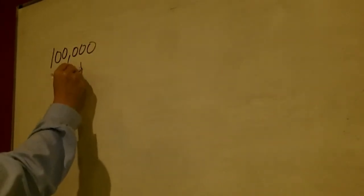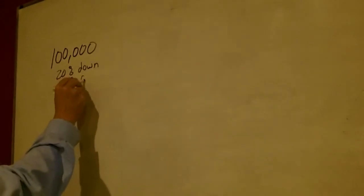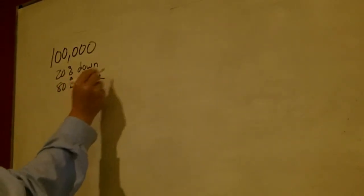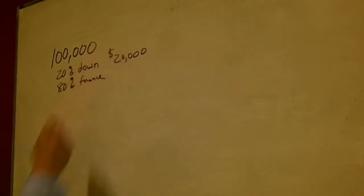So say we buy this same $100,000 house, except this time we're going to finance. We're going to put 20% down and finance 80%. That means we're putting $20,000 down out of our own pocket into this $100,000 rental house.